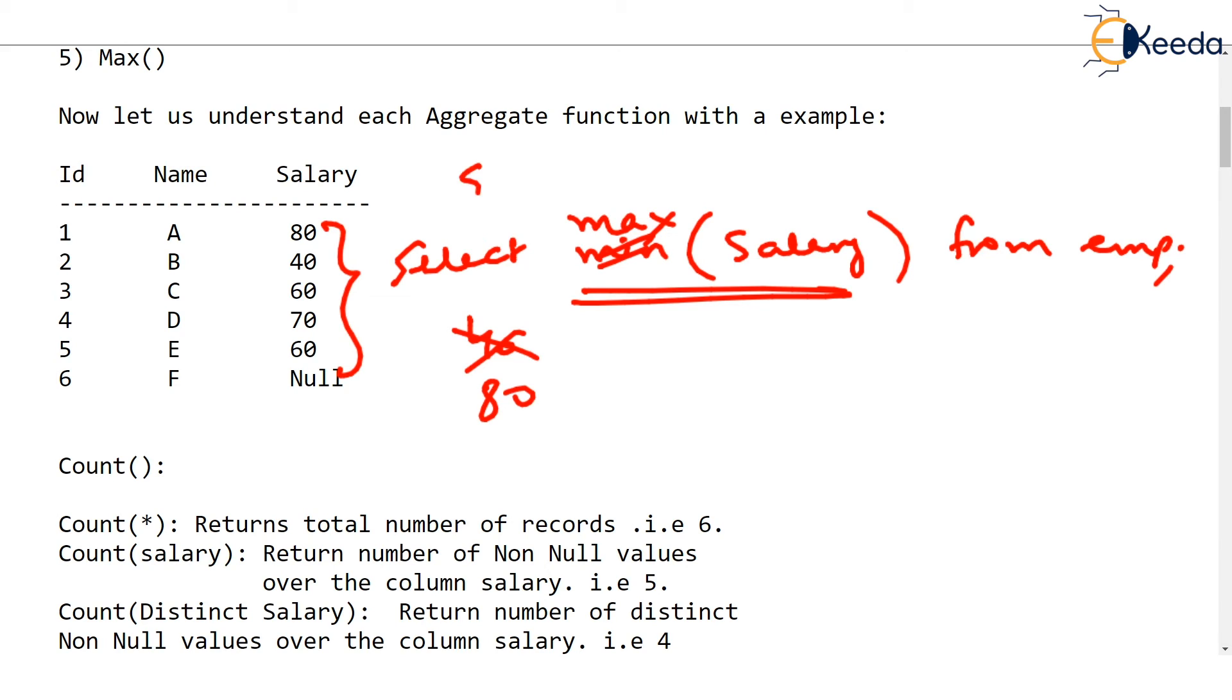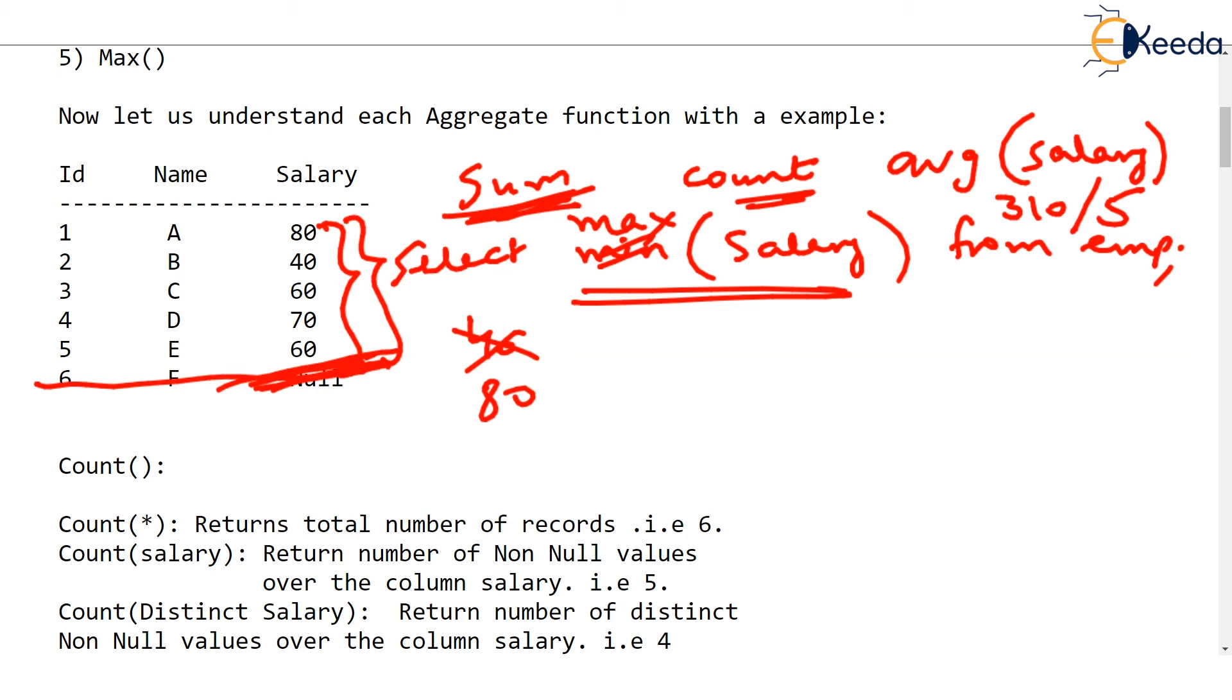Remember one thing: when you sum something, null is not considered. When you count some column, null is not considered. When you find average of some column, again null is not considered. If you say average salary, the average salary is sum divided by, sum is 310 divided by 5 it will be. This null salary is not counted. Otherwise, it should have been 310 by 6. But it won't be 310 by 6. It will be 310 by 5. I hope you got the meaning of all the 5 aggregate functions.